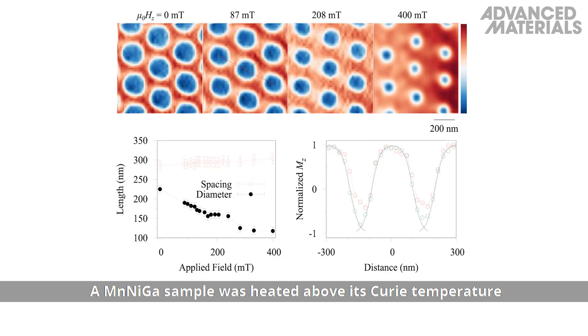A manganese nickel gallium sample was heated above its Curie temperature and cooled back to room temperature in the presence of a sweeping magnetic field, producing a dense array of bubbles.